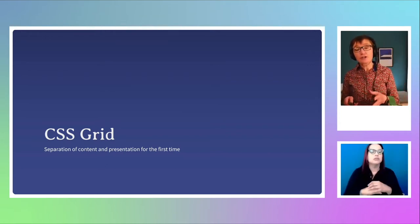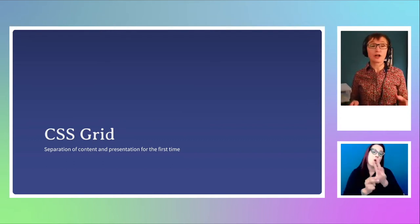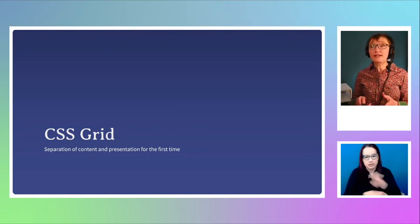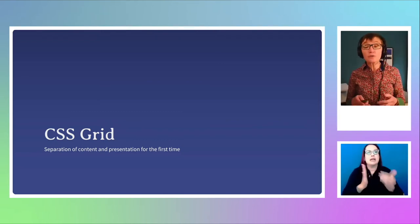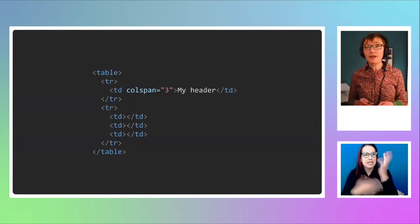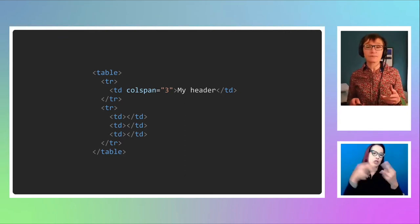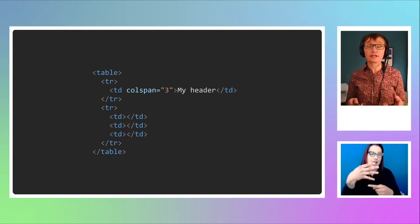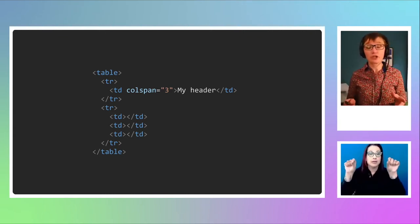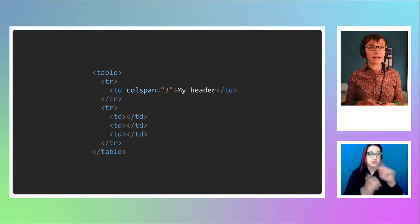I've been doing this for a very long time. I was building websites back in the day when we were trying to encourage people to move away from tables. One of the things we said over and over again back then was that CSS lets you separate your content from your presentation. When you lay something out using tables, you're mixing presentational data in with your content. If you want your heading to span over a number of columns, you have to actually put that into your HTML — you're making decisions about layout in your markup.